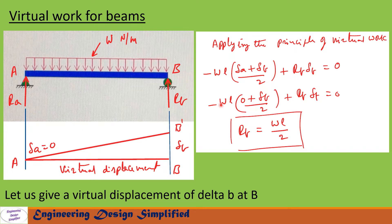Now let us apply the principle of virtual work. The virtual work equation can be written as: minus w into L (total load) into the average displacement (delta_A plus delta_B) divided by 2, plus R_B into delta_B equals zero. The negative sign is because w is acting downwards while delta_B is given in the positive upward direction.